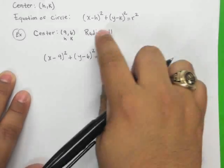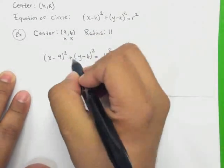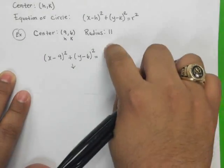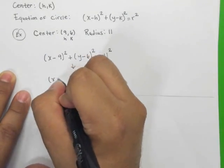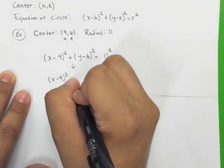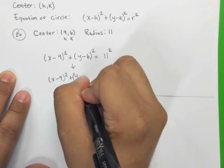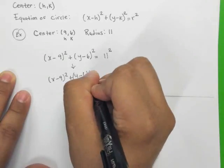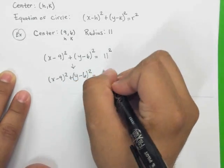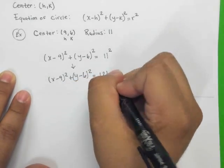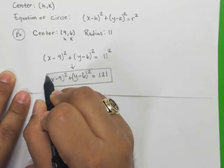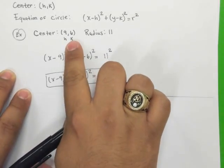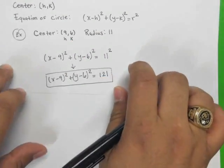So now it's really just a plug-in problem. The hardest part is actually just squaring the radius, and that's really not that bad. Okay, so here we have it. Let me just finish this off for you. Looks something like this, and 11 squared is 121. So this right here is the equation of the circle with the center of 9, 6 and the radius of 11.